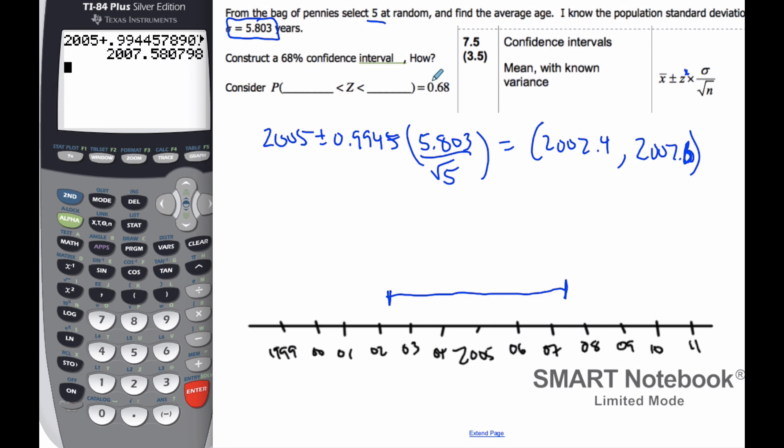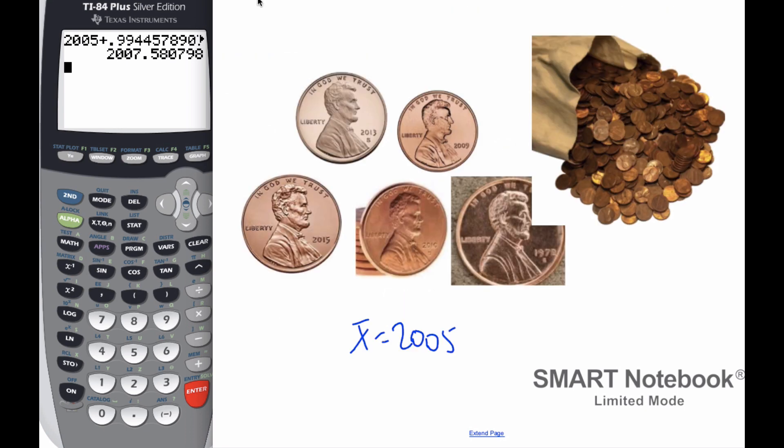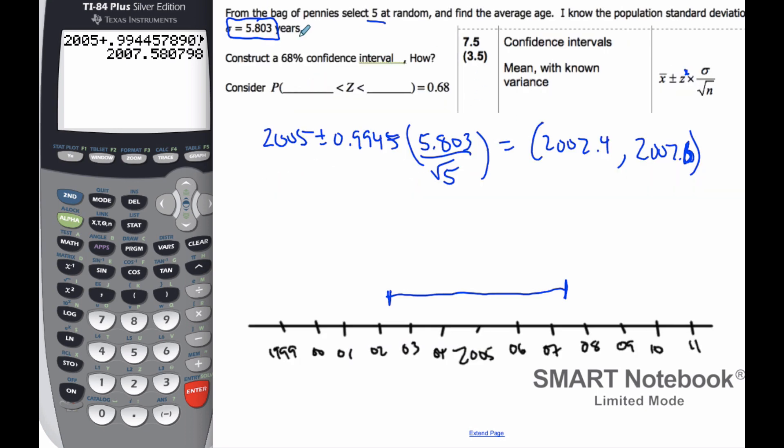And this here is my confidence interval. And so I'm 68% confident that the true mean of this bag of pennies, true mean of the age of pennies, is somewhere in this interval here. And so let's do a bunch of different samples and construct a bunch of different confidence intervals, and let's see what we have. I'll magically come up with them, and you can see what they are.